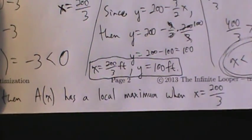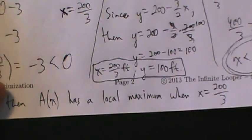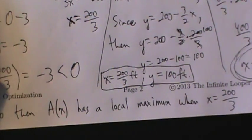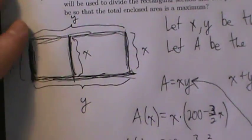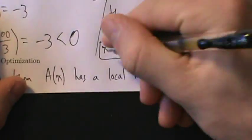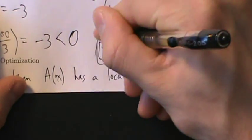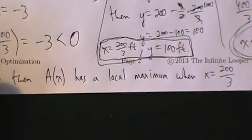That's the answer to our question. The dimensions that give the maximum possible area are x = 200/3 feet and y = 100 feet. That's it for example two, where we have a farmer with fencing closing off a rectangular piece of land divided into two sections.